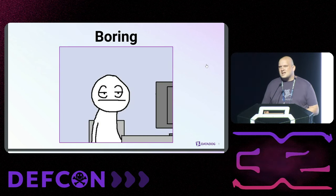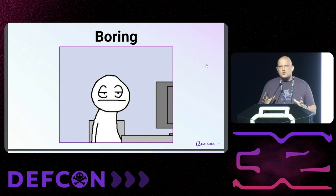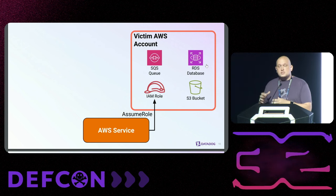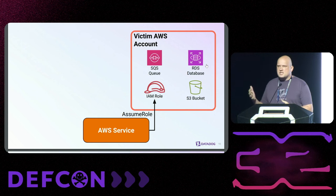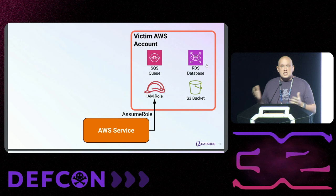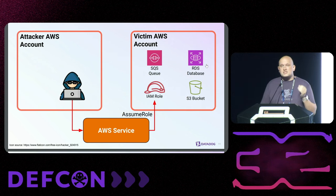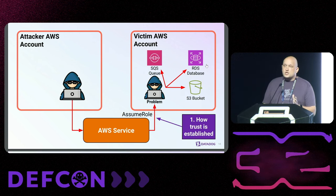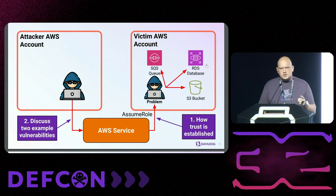What we're going to do instead is kick in the door to the cloud and exploit vulnerabilities in AWS services to get initial access, particularly by abusing pre-existing trust. A common design pattern in AWS is to have IAM roles in your account that have a trust relationship back to some AWS service, enabling that service to perform actions in your account. Today we'll look at vulnerabilities that allow us to hijack that trust relationship and gain access to victim accounts so we can escalate privileges, move laterally, and access resources.